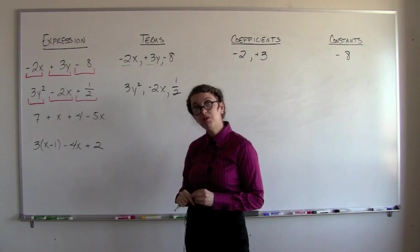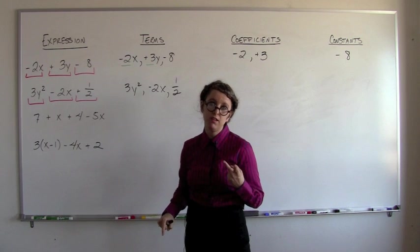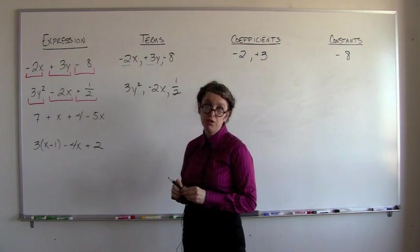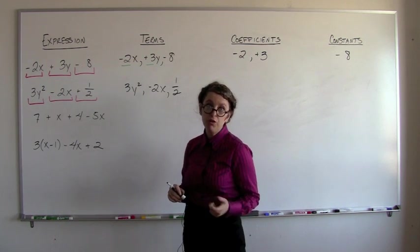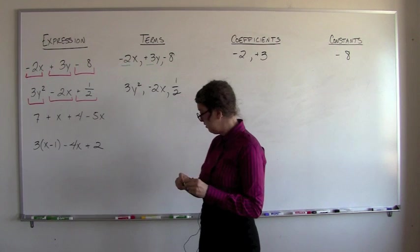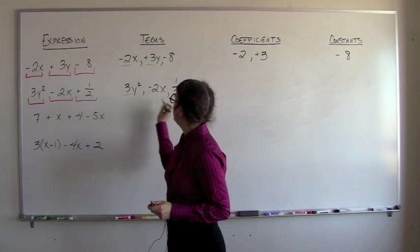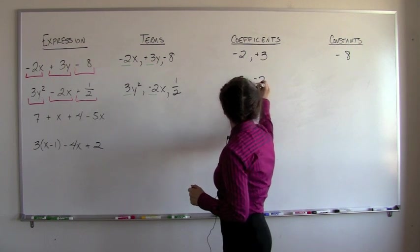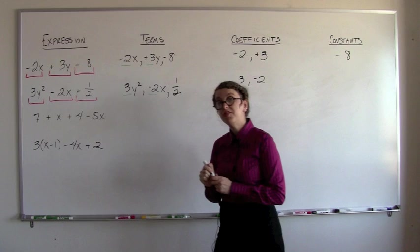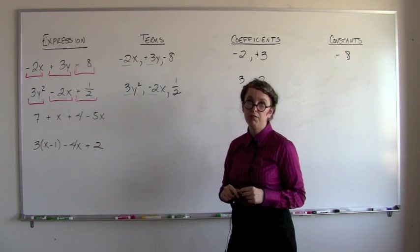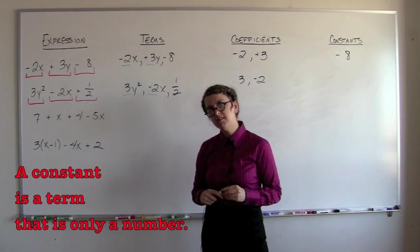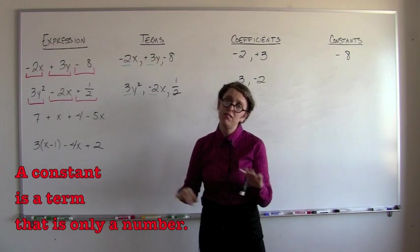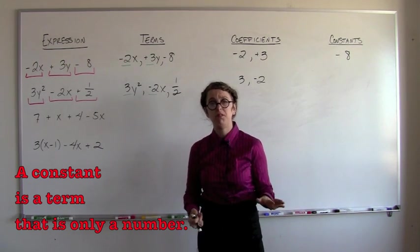So these terms are made up of coefficients, constants, and variables. The y and the x, those are your variables. The numbers stuck on the front of those are your numerical coefficients. So we've got 3 and a negative 2. This little 1 half hanging out all by itself, that's a constant. The reason it's called a constant is because we can't times it by anything, like this little x here, to change its value. So it's constantly 1 half. Nothing we can times it by to make it any different.